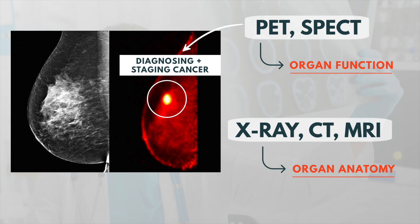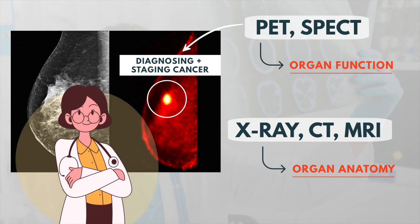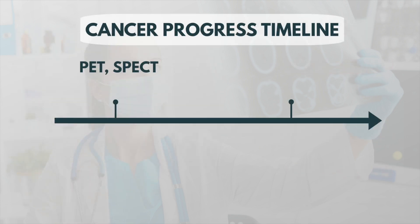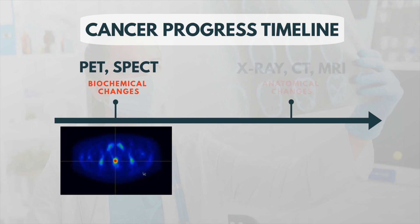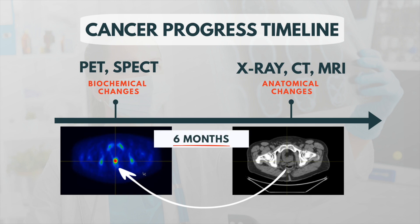This is one of the main reasons why diagnosing and staging cancer is such a big part of a nuclear medicine physician's job. PET and SPECT scans may detect biochemical changes in an organ that can identify cancer lesions before anatomical changes can be seen with CT or MRI. PET scans can detect cancer on average six months earlier than a CT scan.